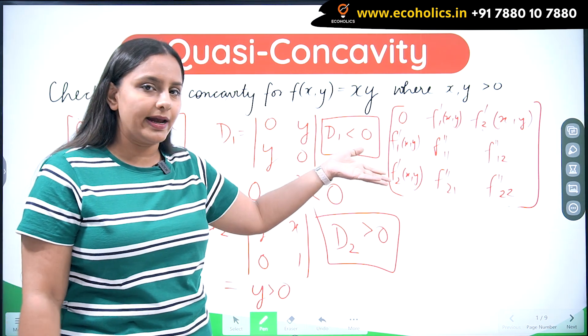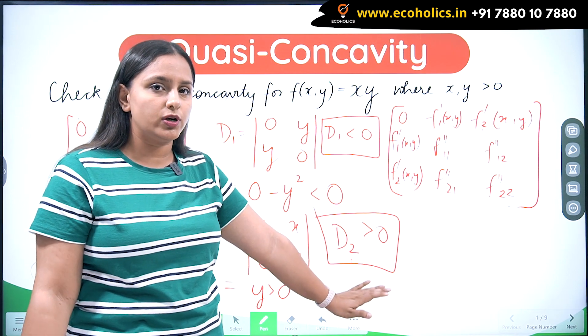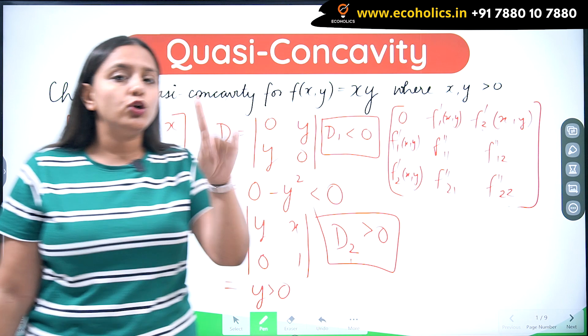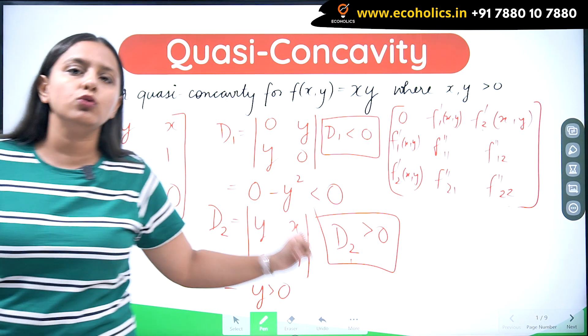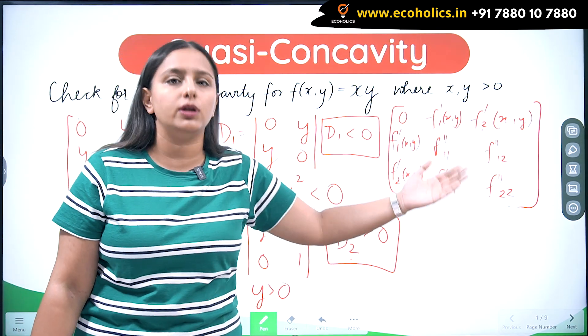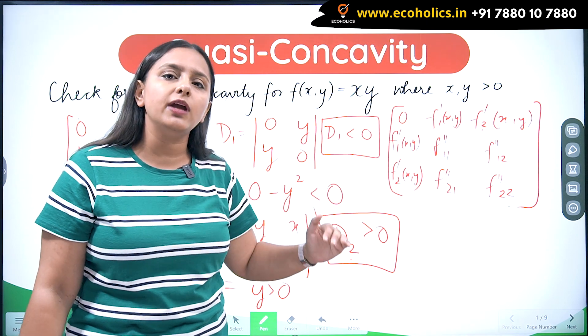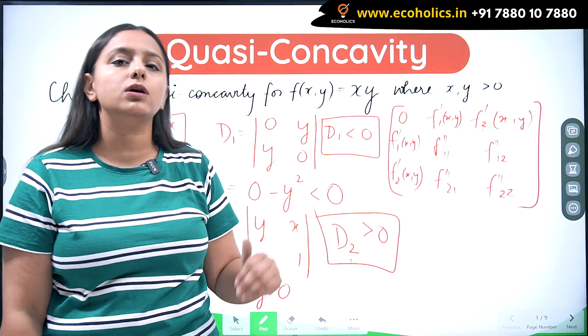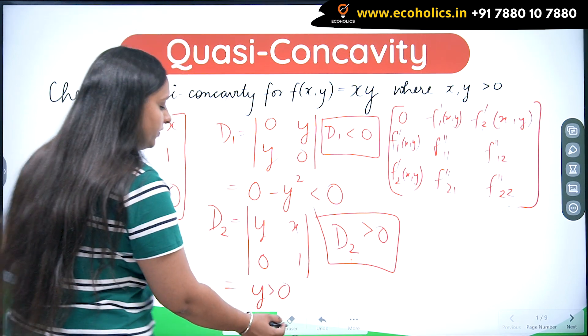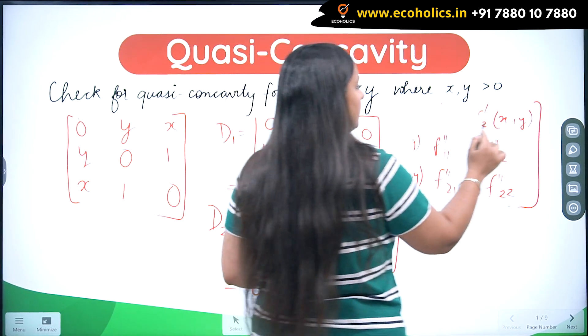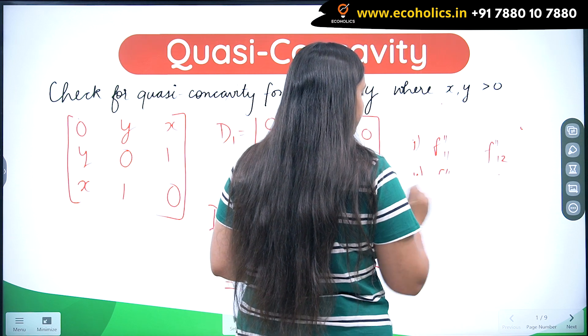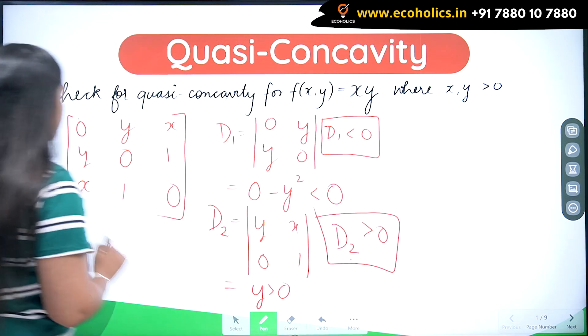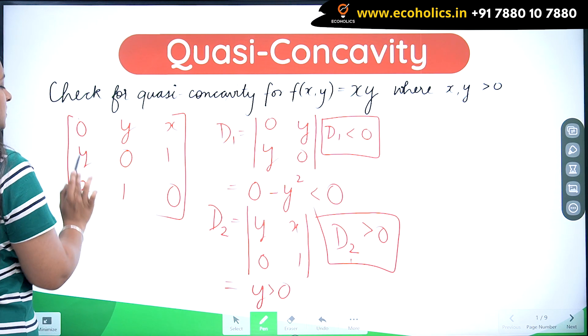So it is going to be quasi-concave. But I told you in that video where I was teaching you this method that you have to go till D3 at least, because sometimes D3 can be positive also, which does not fulfill the condition of quasi-concavity. So let us just check that. When it comes to D3, I would be taking these two columns: 0, y, x, 1.